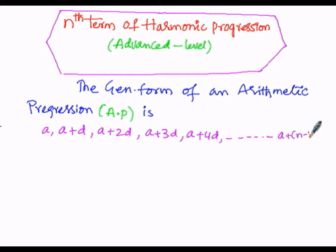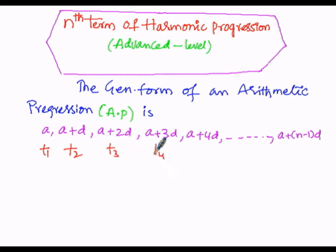This is the general form of an arithmetic progression in which the first term is 'a', the second term is a plus d, the third term a plus 2d, the fourth term a plus 3d, the fifth term a plus 4d, and the nth term is a plus n minus 1 into d.